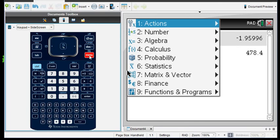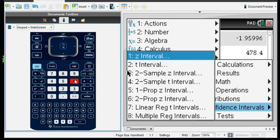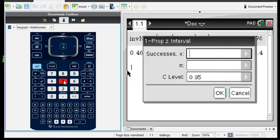Let me go back there. Menu, Option 6 Statistics, Option 6 Confidence Intervals, Option 5, the 1 Proportion Z Interval.